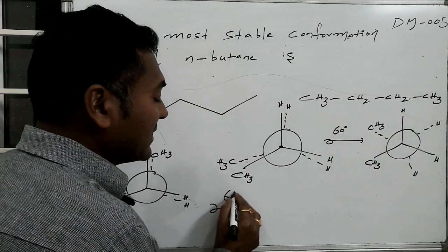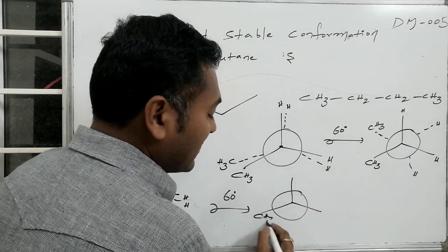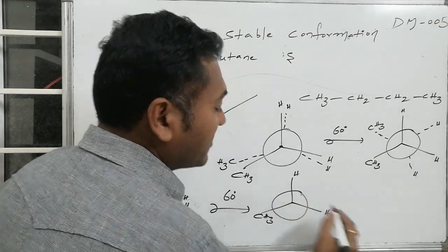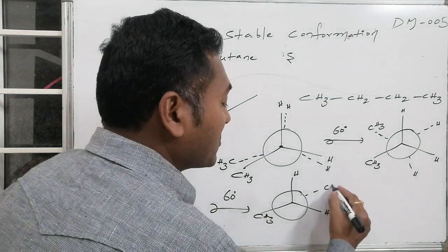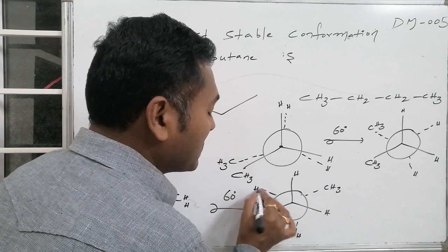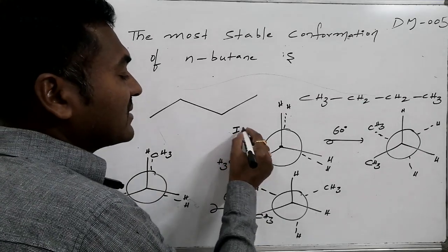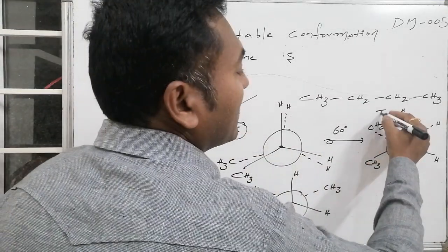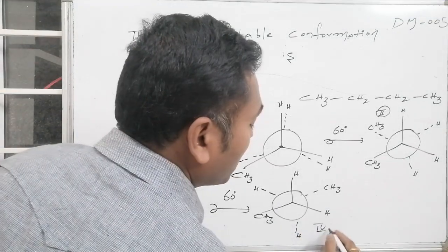Whereas another 60 degrees, if we rotate that resulted as methyl is here as it is at its original position, hydrogens are also same. Whereas this methyl comes over here, this hydrogen comes over here, this hydrogen also comes over here. If I repeat also, the same situation is repeated. If I number it, this has 1 and this has number 2 and this has number 3 and this has number 4.